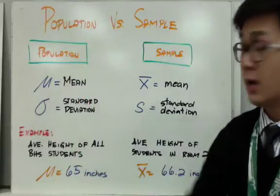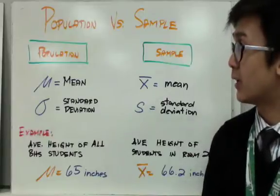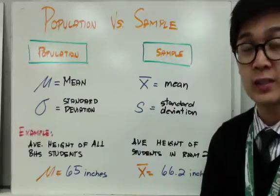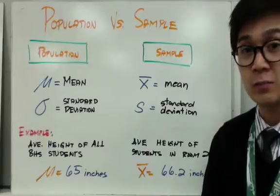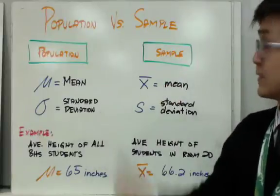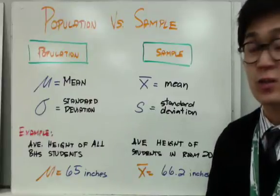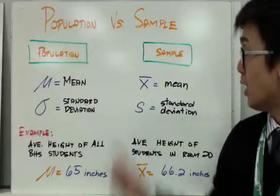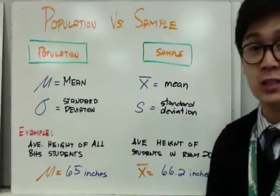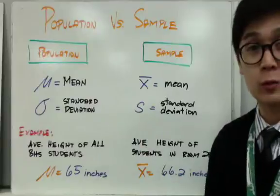For population, we use Greek letters for statistical measures. We use mu as the symbol for mean, and the Greek letter sigma for standard deviation based on the population. Whereas in sample, if we took the mean based out of the sample, we use X-bar. And for the standard deviation, we use the small letter S.